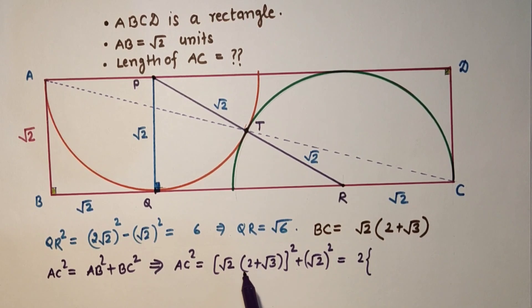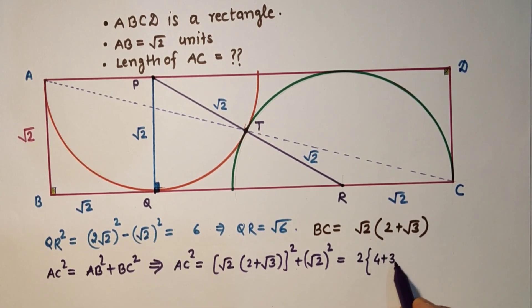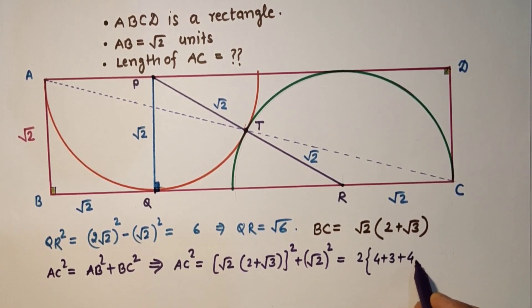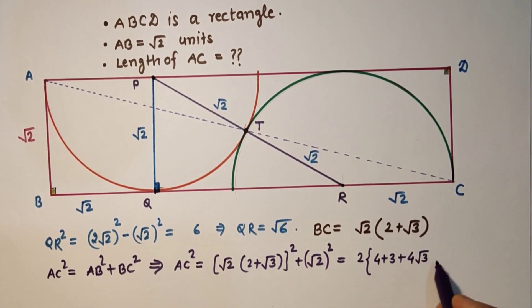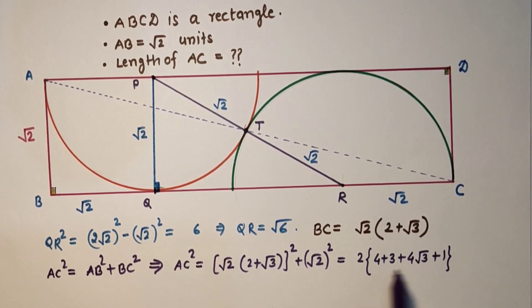If we take 2 common, this will be 2 plus root 3 the whole squared which is 4 plus 3 plus 4 root 3 plus 1. So this is finally 8 plus 4 root 3.